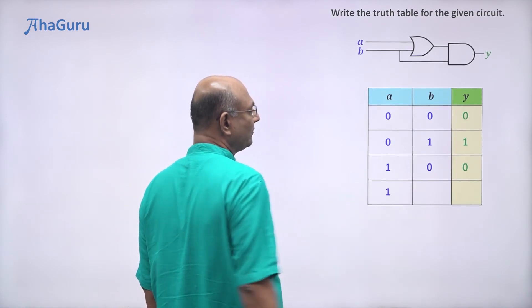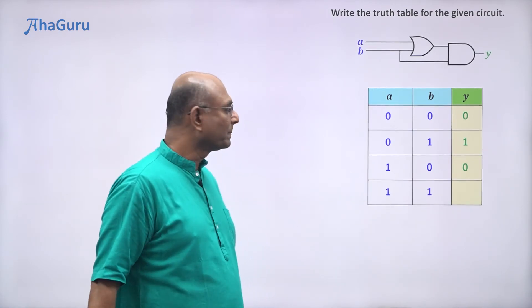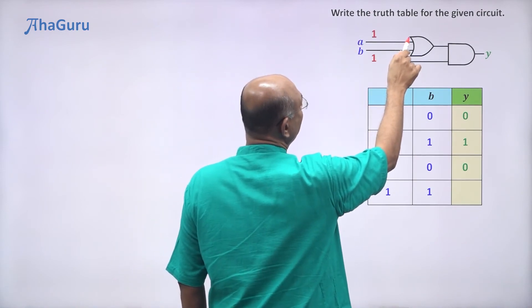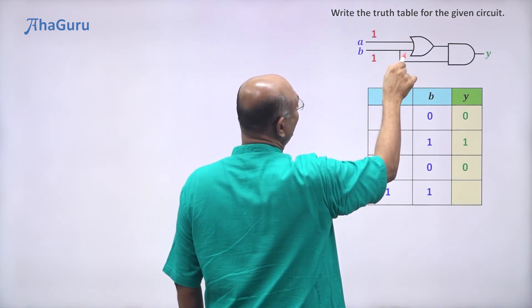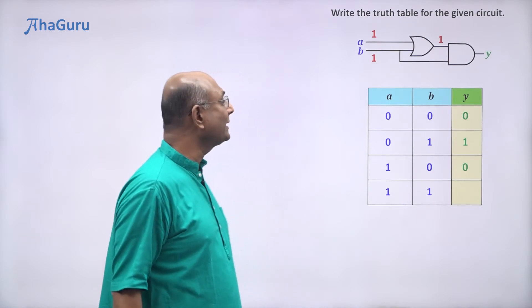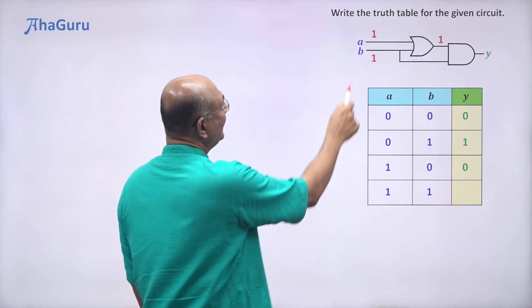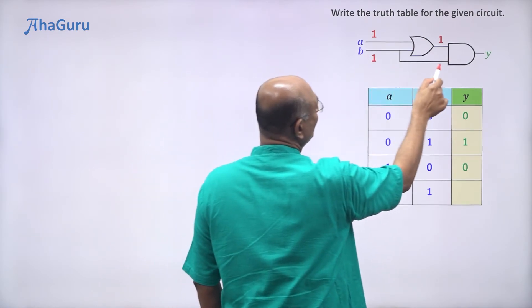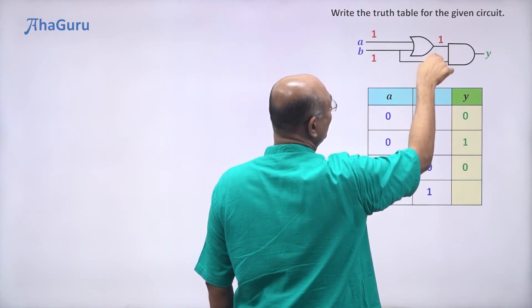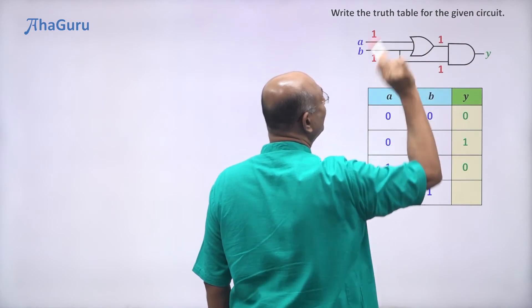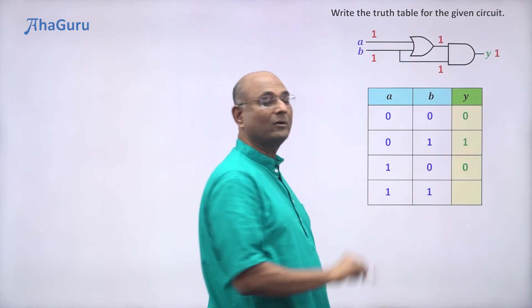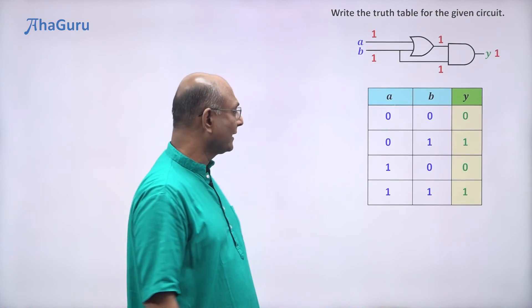The last case is A=1, B=1. A is one, B is one. The OR gate inputs are one and one, output is one. B also goes to the AND gate as one. So one AND one is one, and Y equals one.